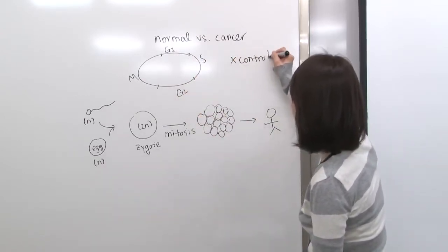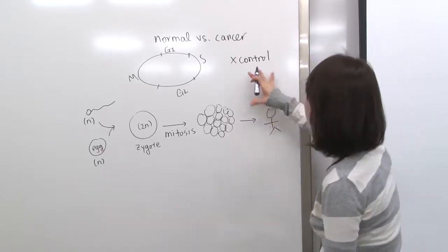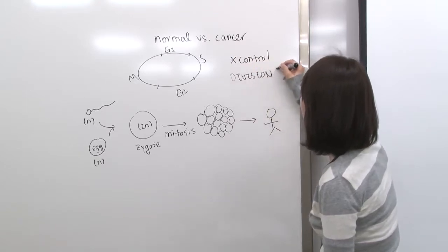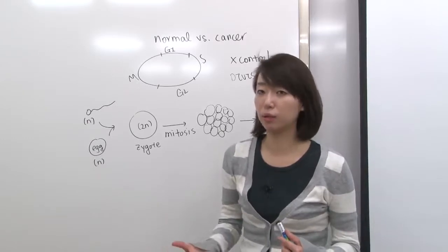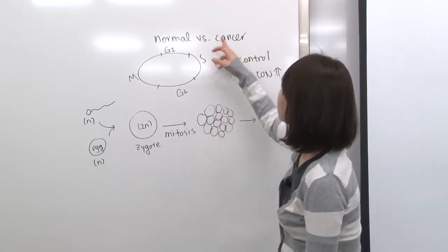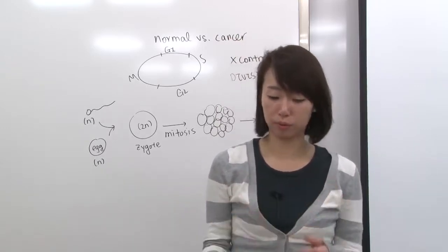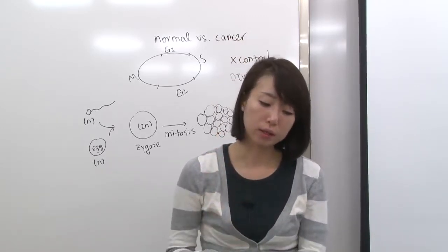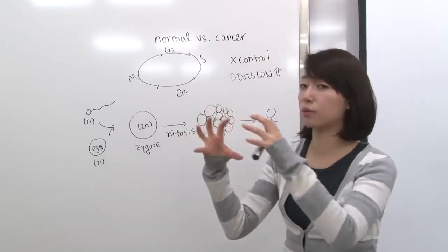So cell cycle has like lost control so that division goes very high. So you divide very rapidly. So if a cell actually goes through division very rapidly, abnormally, that's going to create a tumor in your body. And it's going to create so much daughter cell that has wrong DNA information.